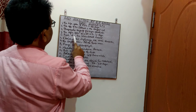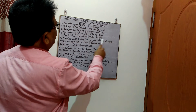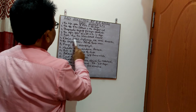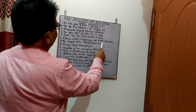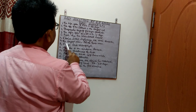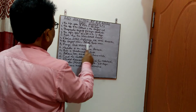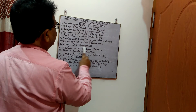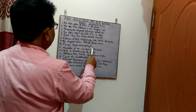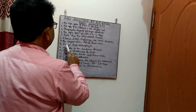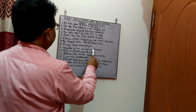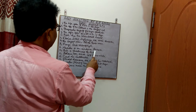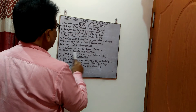Ebola, SARS, and influenza are viral diseases. The largest virus is the potato fever virus. Fungi lack chlorophyll. Measles is an airborne disease — please learn this again: measles is an airborne disease. Bile is produced by the liver.